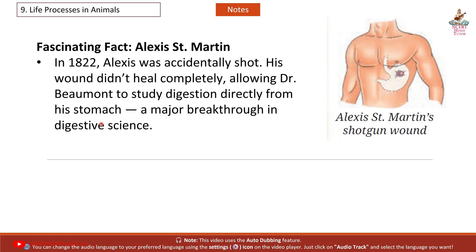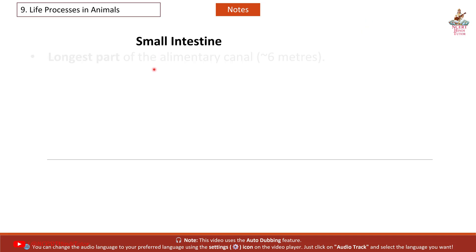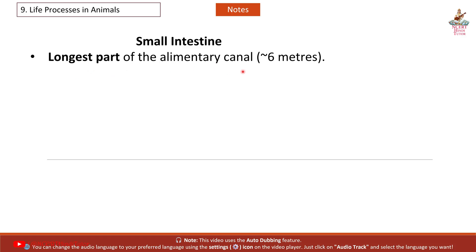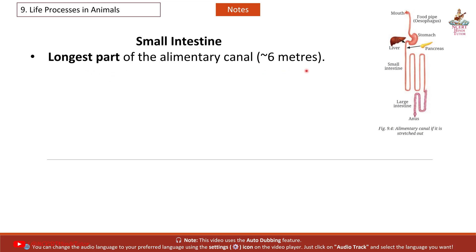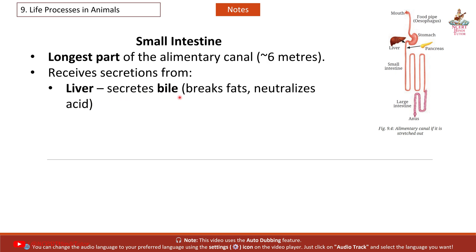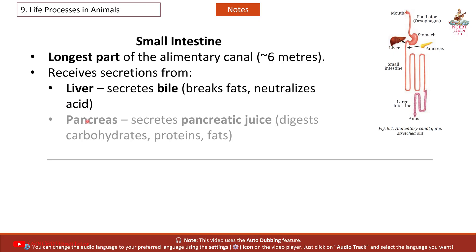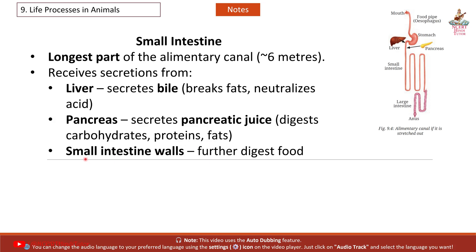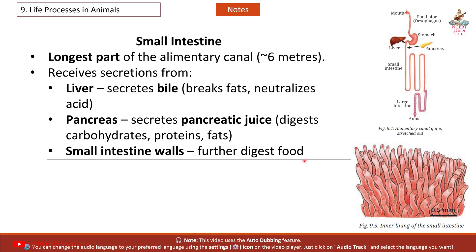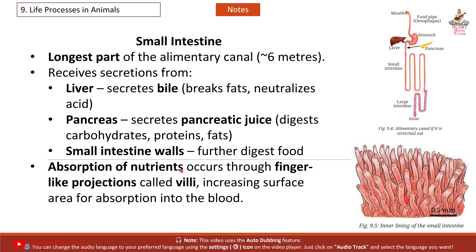The small intestine is the longest part of the alimentary canal, approximately 6 meters. It receives secretions from the liver, which secretes bile to break down fats and neutralize acid. The pancreas secretes pancreatic juice, which digests carbohydrates, proteins, and fats. The small intestine further digests food, and absorption of nutrients occurs through finger-like projections called villi, which increase surface area for absorption into the blood.